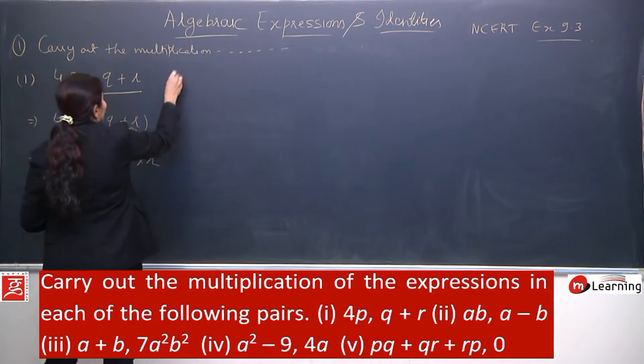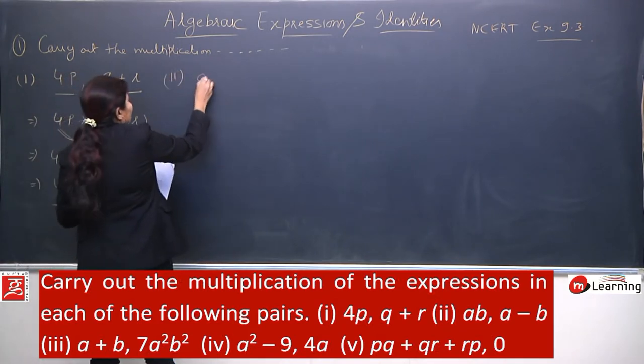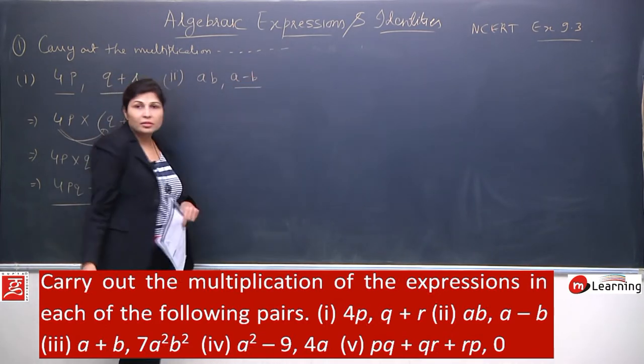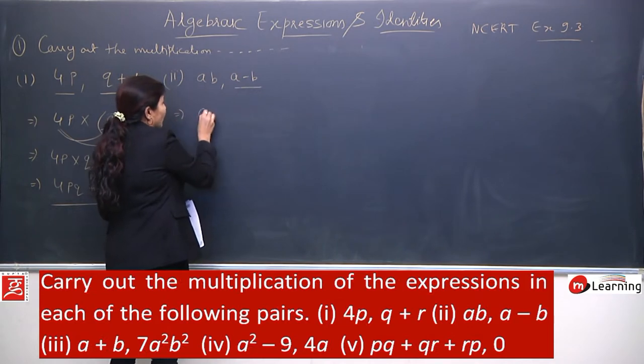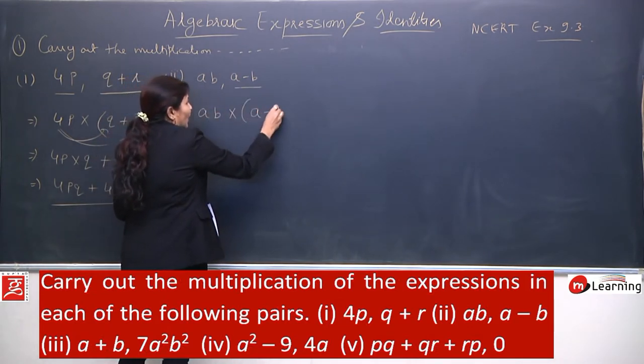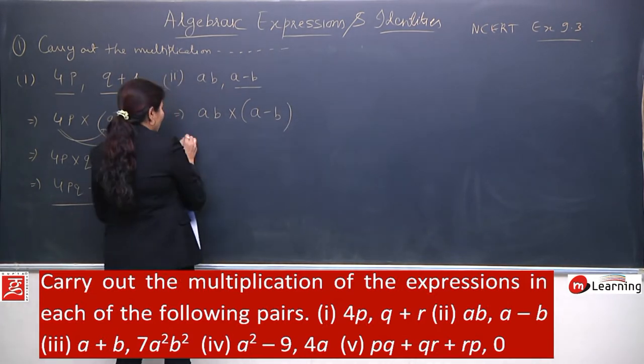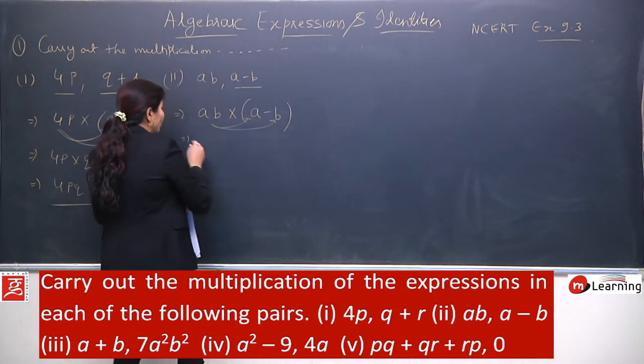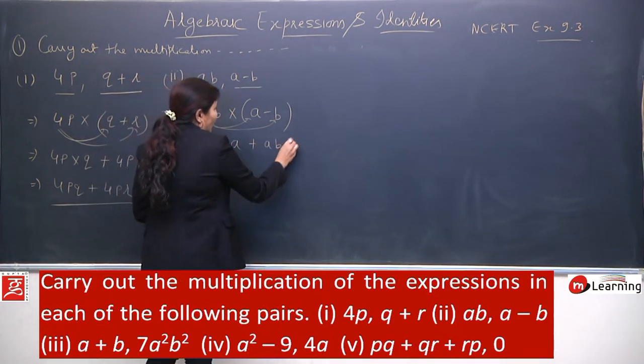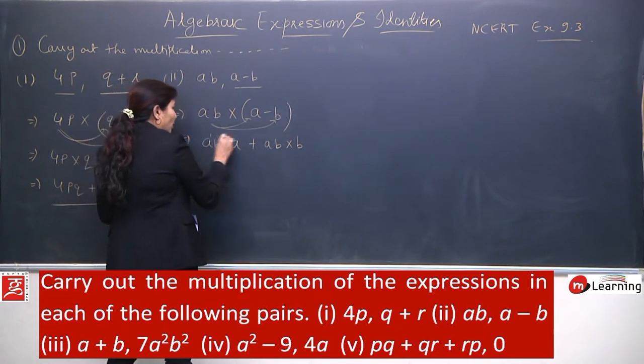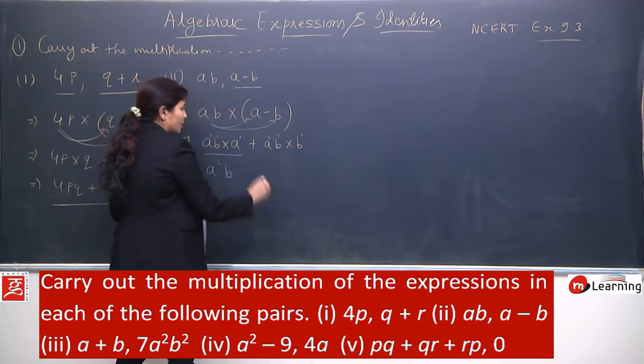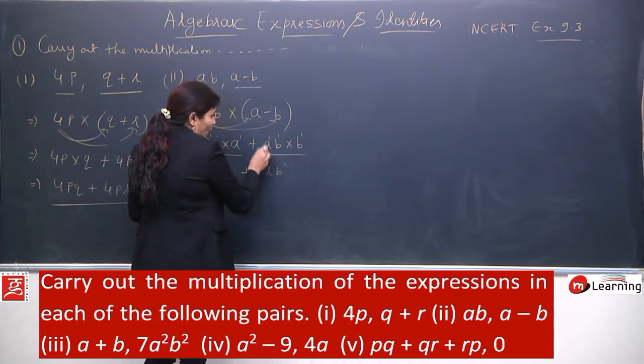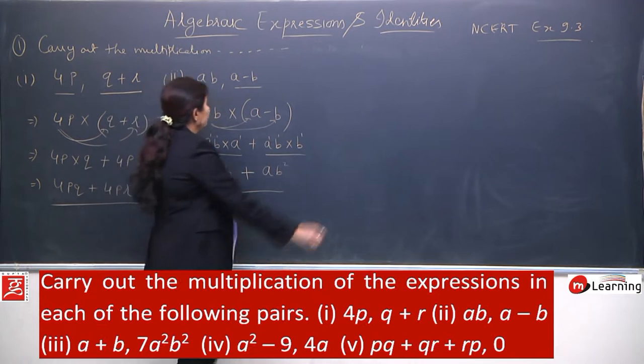Second and third we will do together because they are very small questions. Second is ab, a minus b. Again, it's a binomial because it has two terms. How will we write this? ab multiply by a minus b. After this, this will multiply with this and this will multiply with this. You should write by the distributive property, but now I'm not going to write it because we have done many such questions. ab multiplied by a and ab multiplied by b. There is no power here, meaning power is one. a and a will give you a²b. So this will be a²b. Copy the operation and this will be ab². So this is your answer which is very easy.